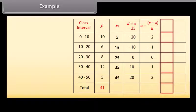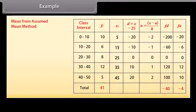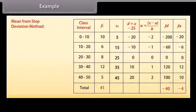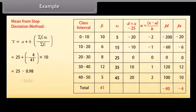The product fi·di sums to minus 40, and the product fi·ui sums to minus 4. Using the assumed mean method: x-bar equals 25 plus (−40 divided by 41) equals 25 minus 0.98 equals 24.02. Using the step deviation method: x-bar equals 25 plus (−4 divided by 41) multiplied by 10 equals 25 minus 0.98 equals 24.02.